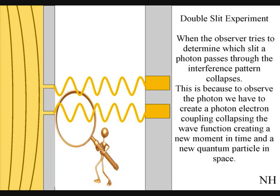Because to observe the photon, we have to physically create a photon-electron coupling, collapsing each wavefront into a new quantum particle that will have its own position in space and time, that the wavefront never had before the collapse.